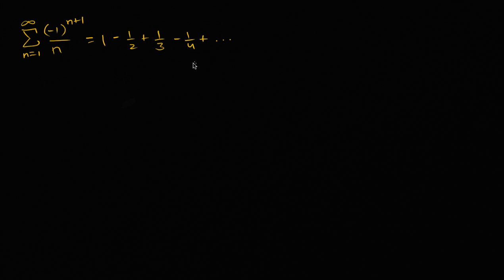In the video where we introduce the alternating series test, we used the infinite series from n equals one to infinity of negative one to the n plus one over n. We used this as our example to apply the alternating series test and proved that this thing right over here converges. This series — one minus one-half plus one-third minus one-fourth, going on forever — converges by the alternating series test.